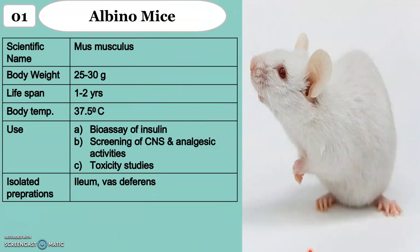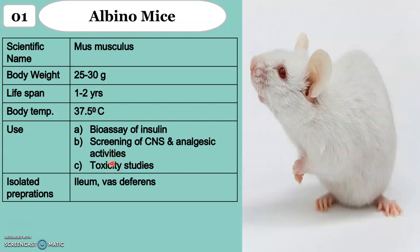Now, we will see each animal one by one — their scientific name and parameters. The first one is albino mice. The scientific name is Mus musculus. Body weight: 25 to 30 grams. Lifespan: 1 to 2 years. Body temperature: 37.5 degrees Celsius, which is near the same as the human body. Uses include isolated preparations such as ileum. Please pause this video and write each parameter in your practical notebook.